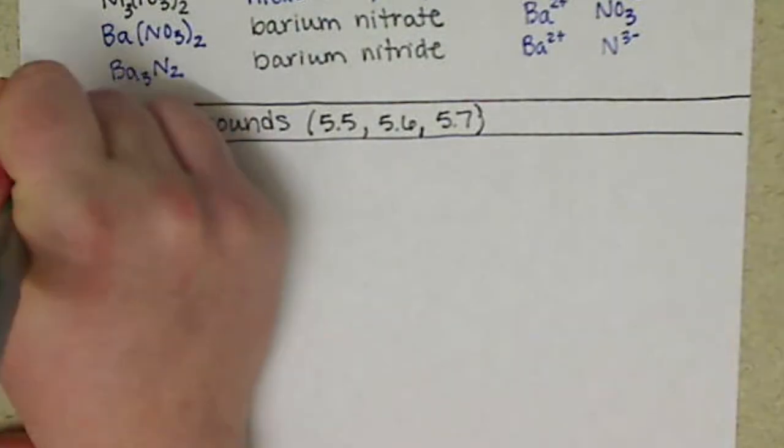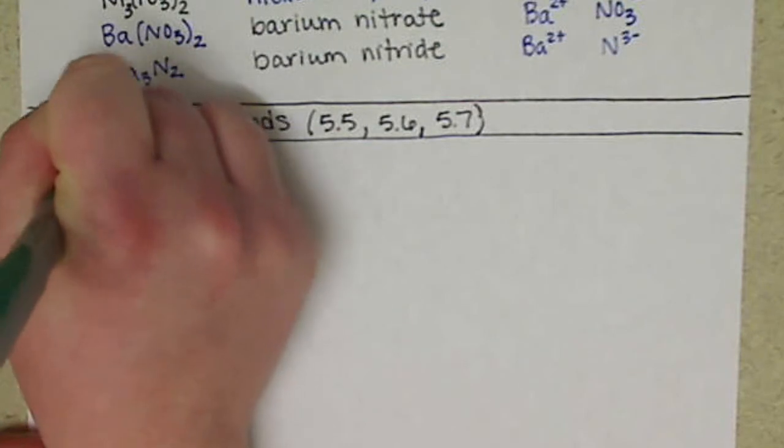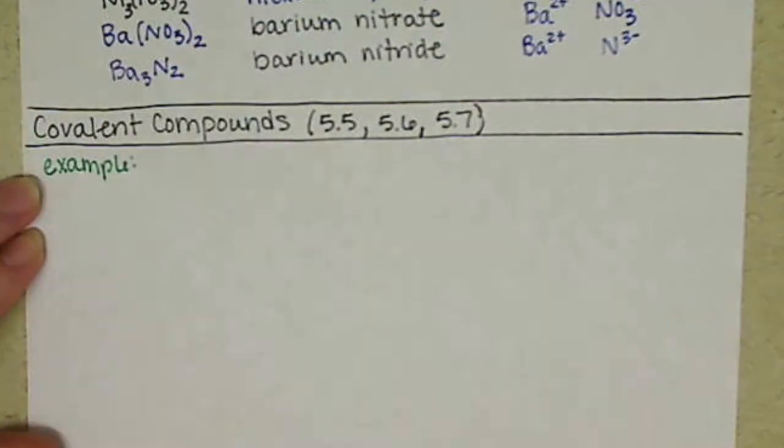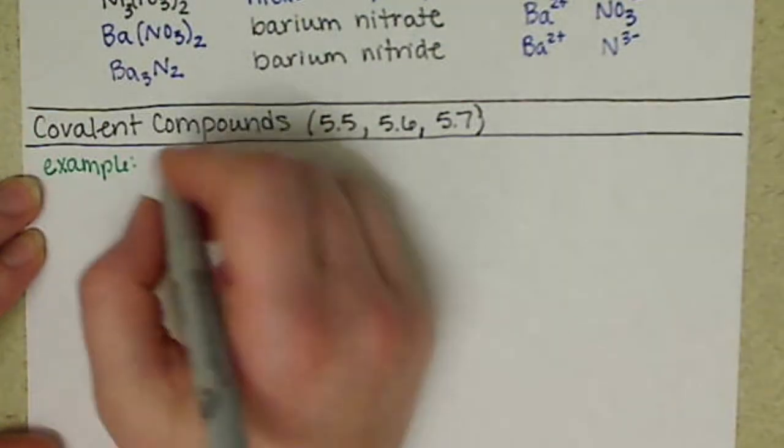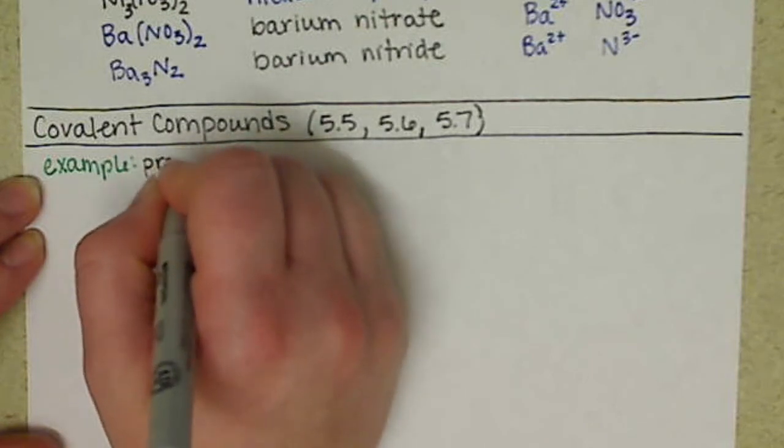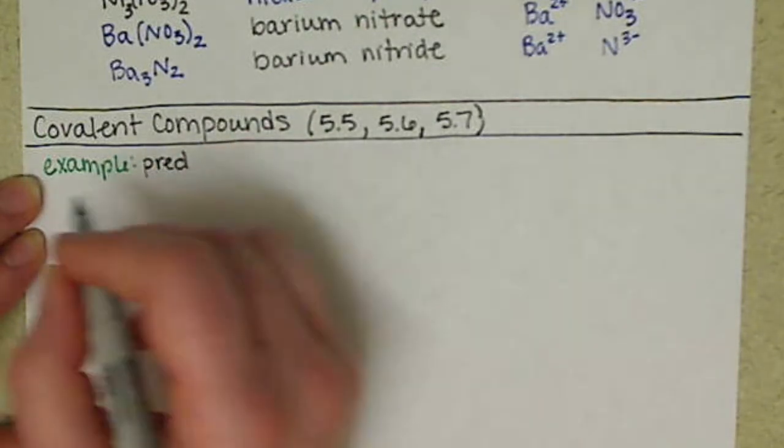Now, just like we did with ionic compounds, it's helpful to look at an example. So I would like you to predict the compound formed between nitrogen and oxygen.